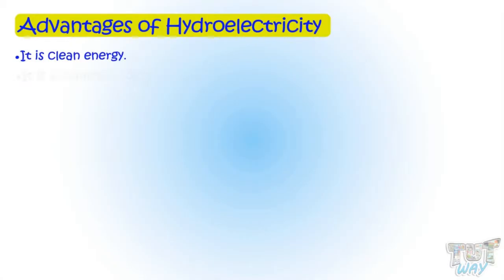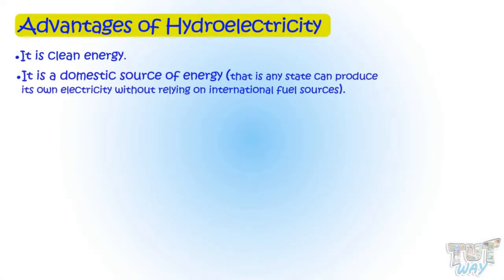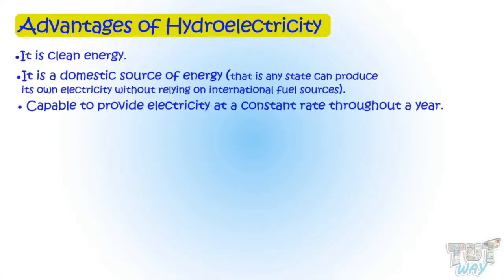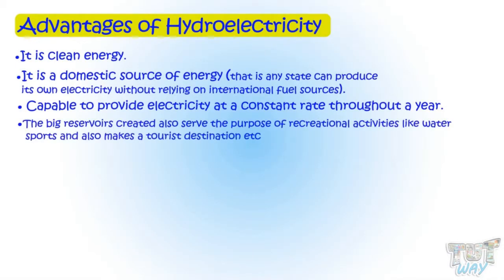Secondly, it can be a domestic source of energy — any state can produce its own electricity without relying on international fuel sources. A hydropower plant is capable of providing electricity at a constant rate throughout the year. The big reservoirs created in the process of making dams also serve the purpose of recreational activities like water sports and make it a tourist destination.